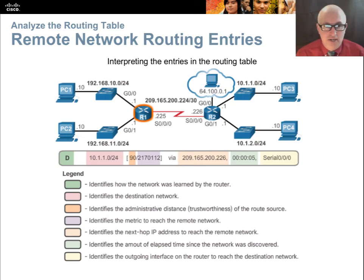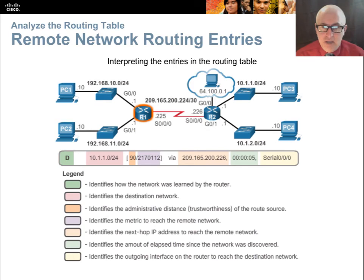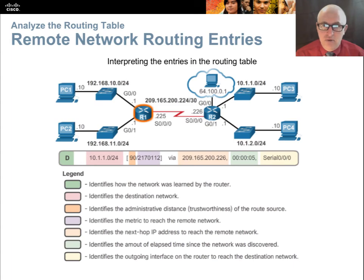This is the anatomy of a route in the routing table. It starts on the left with the source — S for static, C for directly connected, D for EIGRP, O for OSPF, R for RIP. Then the destination network, then the AD — in this case 90 — which is the trustworthiness of this information. Then the metric — the cost. Both the AD and the cost metric are used to compare two candidate routes to the same destination: choose the lower AD first; if equal, choose the lower metric; if equal, load balance. The destination is reached via a next hop router — 209.165.200.226 — the information was learned 5 seconds ago, and the outgoing interface is 0/0/0.